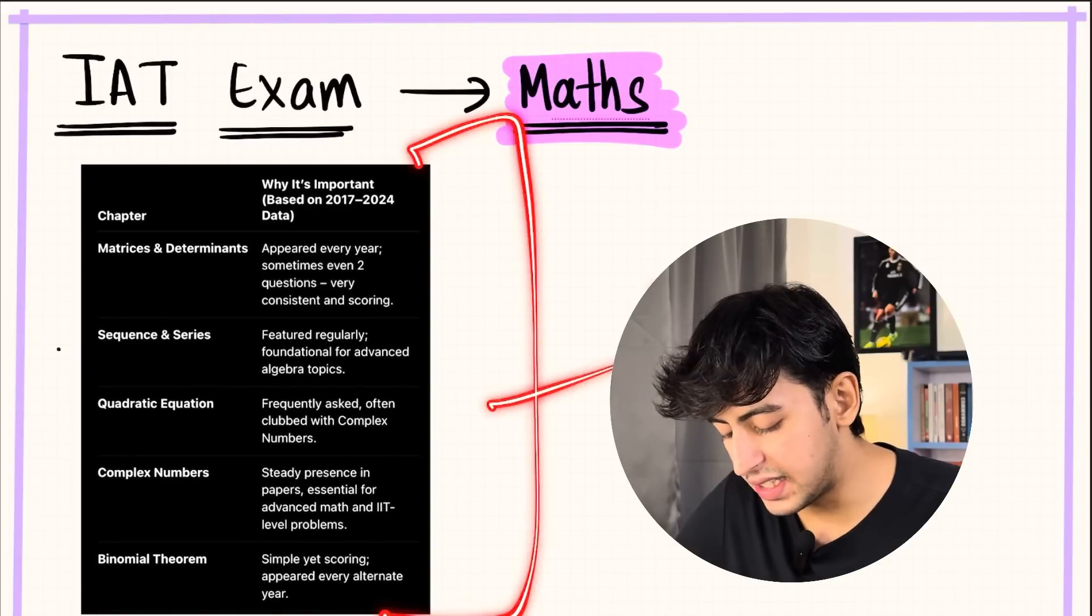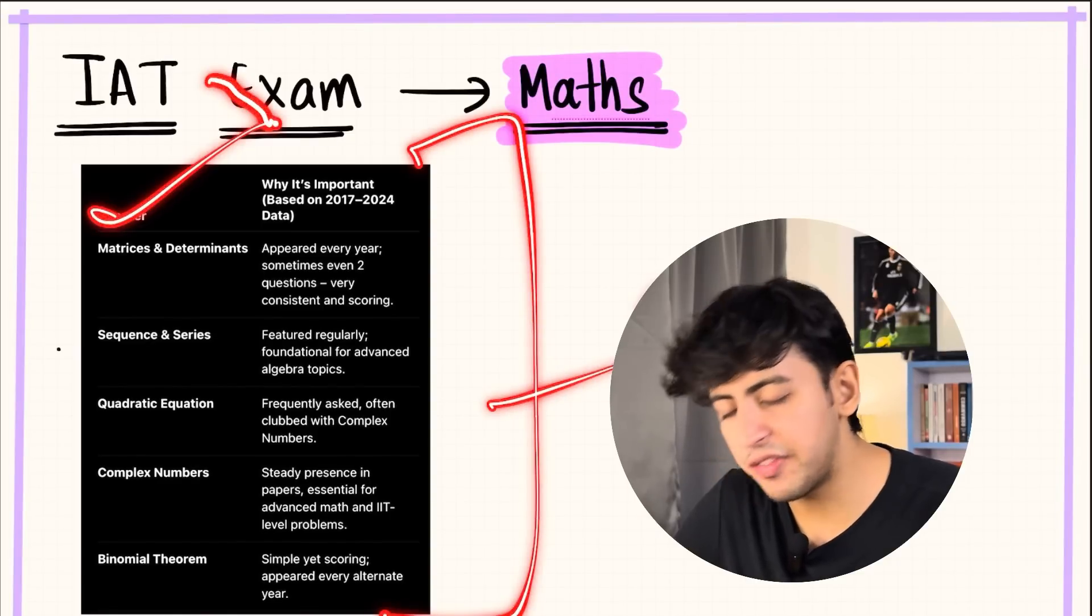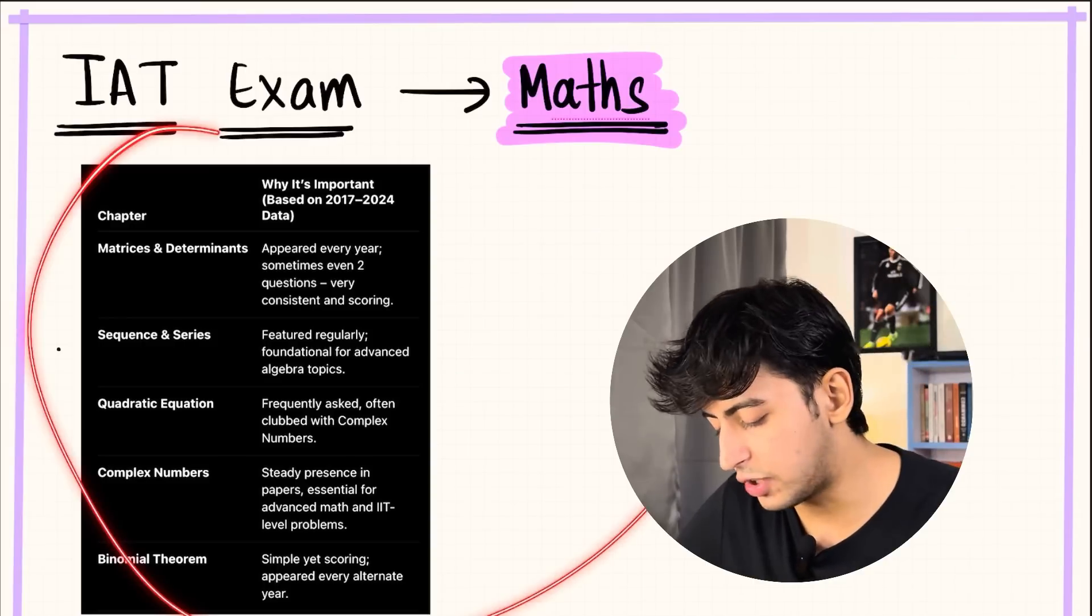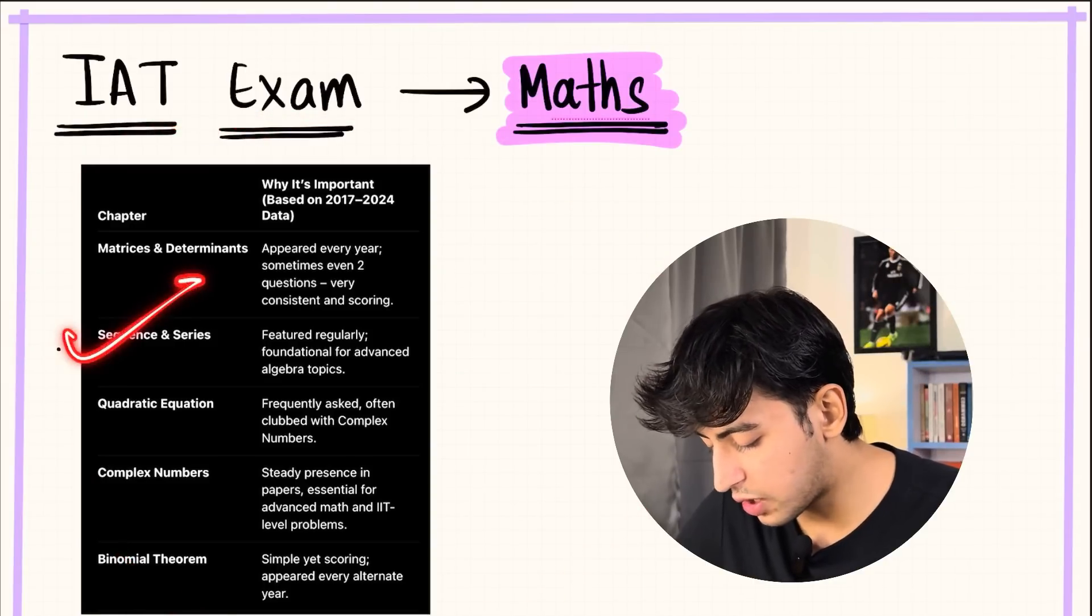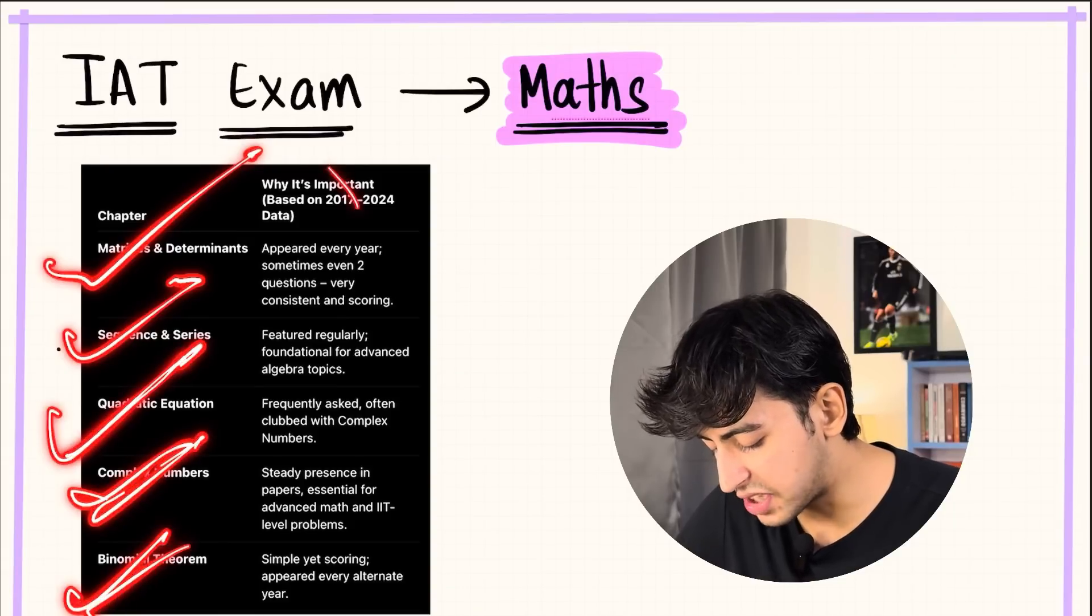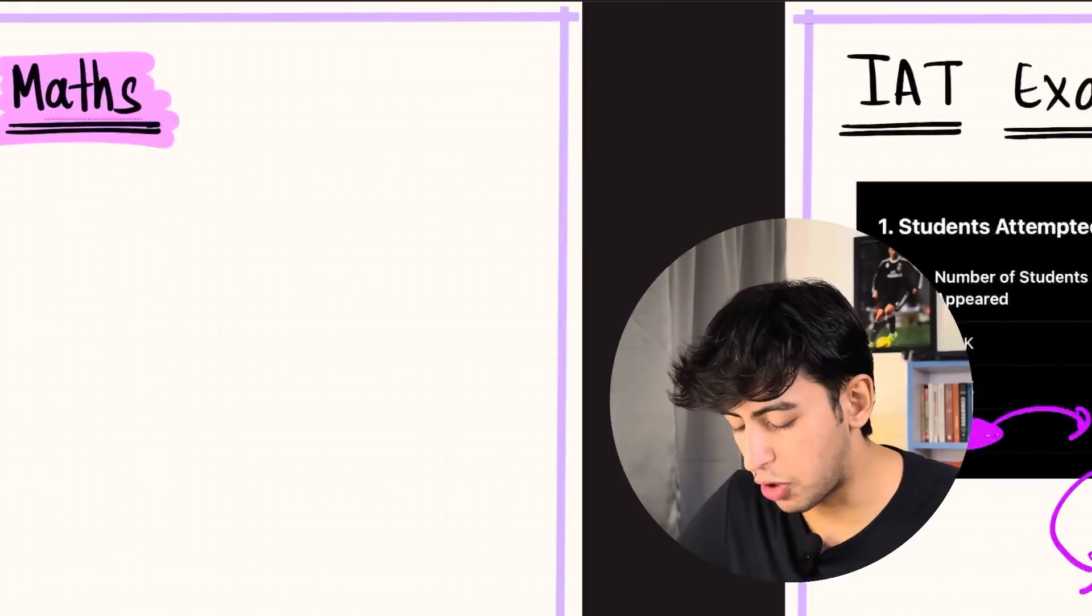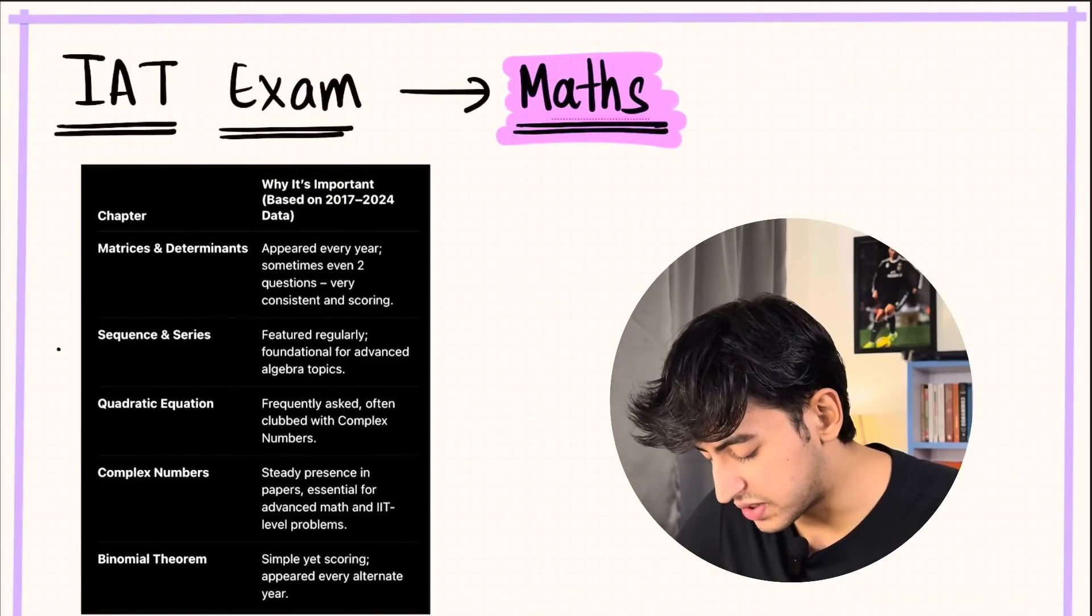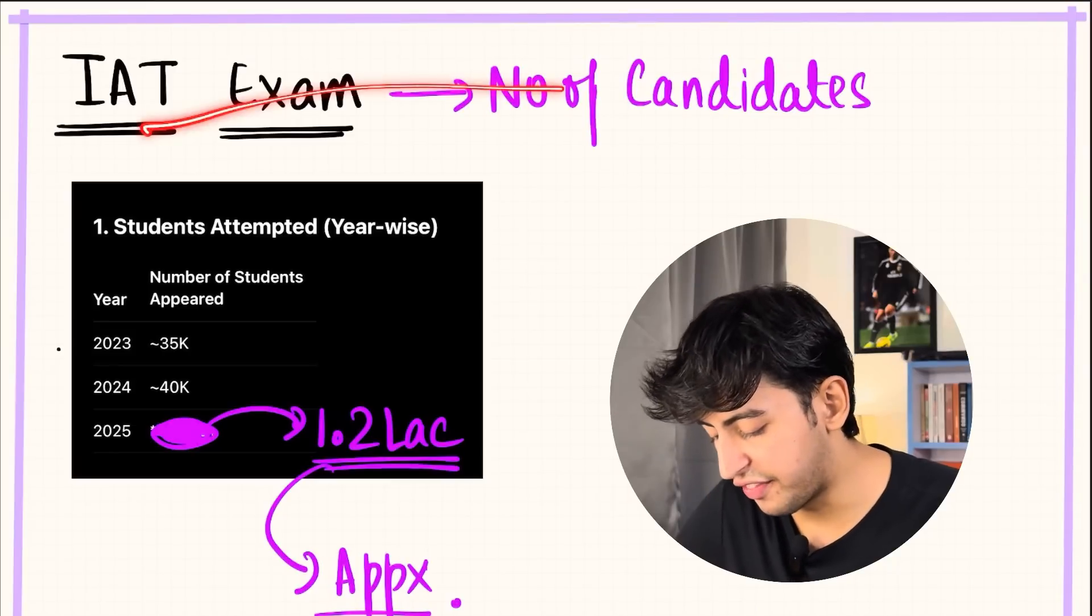These topics are very repetitive in nature and they're very easy to cover. I've categorized these—they include your sequence and series, matrices and determinants, quadratic equation, complex numbers, and then binomial theorem. So these are five topics. Now coming to the number of candidates that are going to appear: in 2023 it was around 35K, in 2024 it was around 40K.